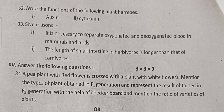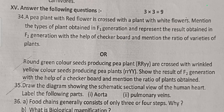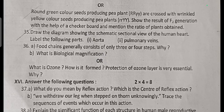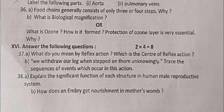Give reasons: why is it necessary to separate oxygenated and deoxygenated blood in mammals and birds? Why is the length of the small intestine in herbivores longer than in carnivores? Three-mark questions: A plant with red flowers is crossed with a plant with white flowers — mention the type of plant obtained in the F1 generation, represent the result in F2 generation with a checkerboard, and mention the ratio of varieties. Draw a labelled schematic section view of the human heart, labelling the pulmonary vein. Question 36: Why does a food chain generally consist of only three or four steps?